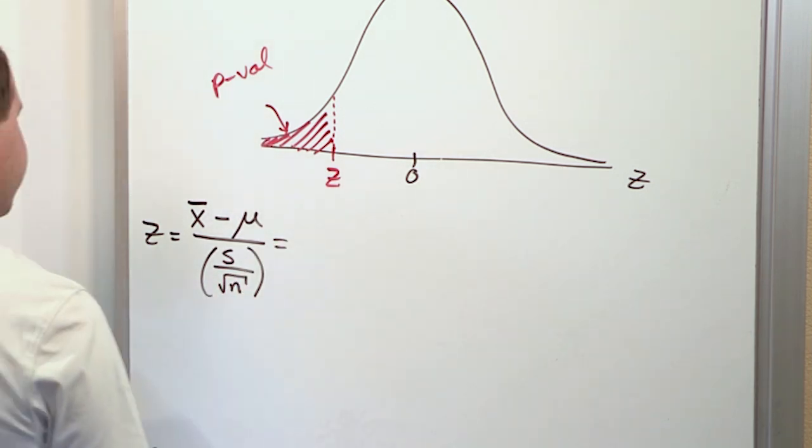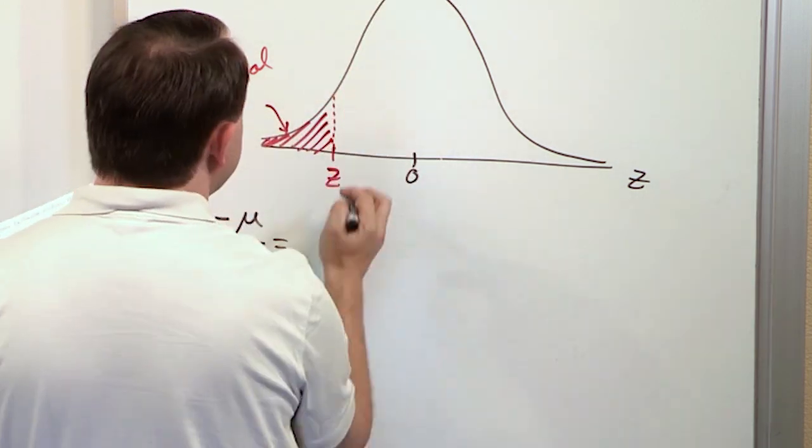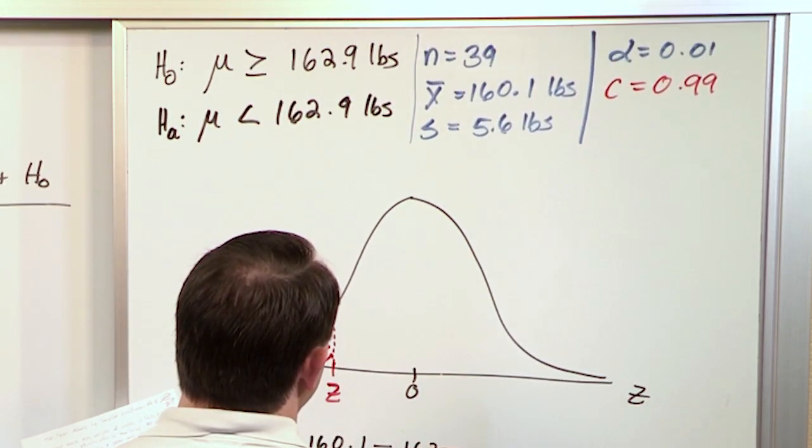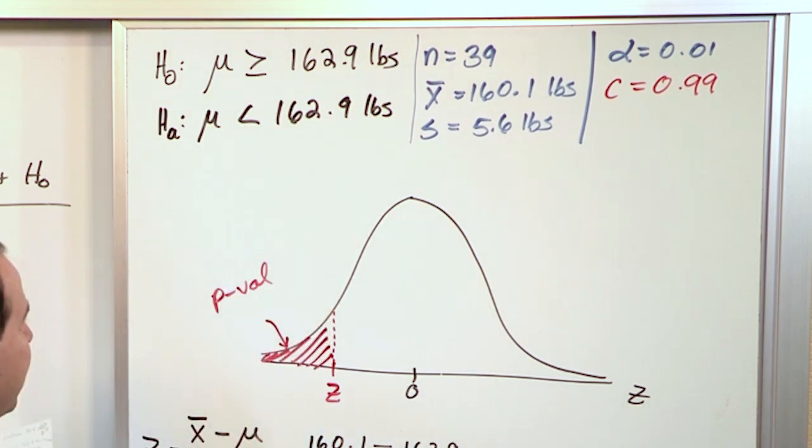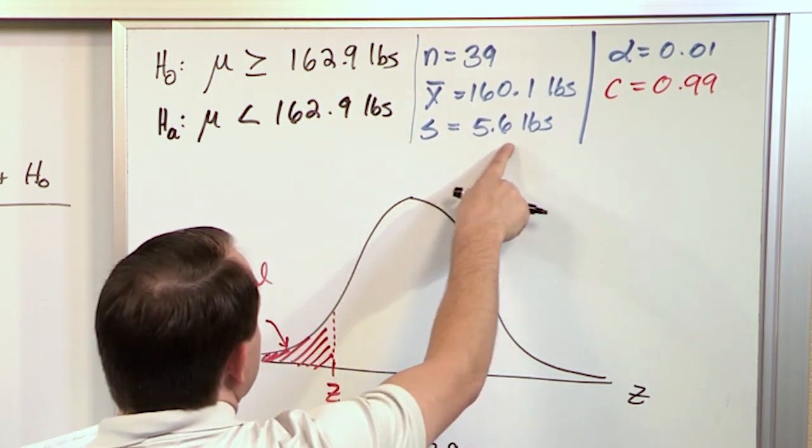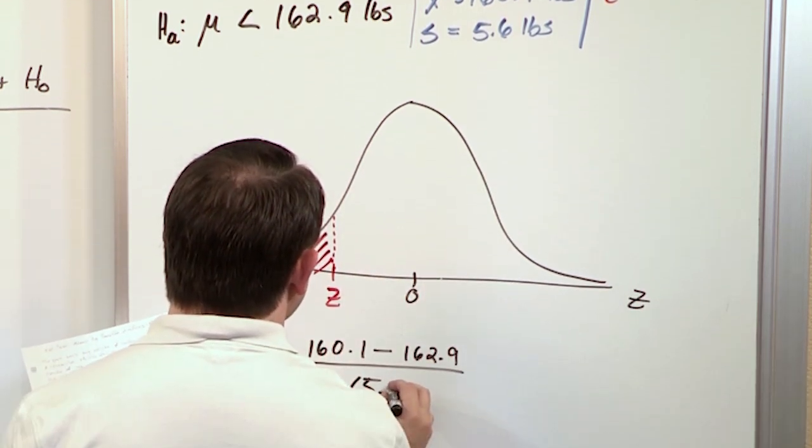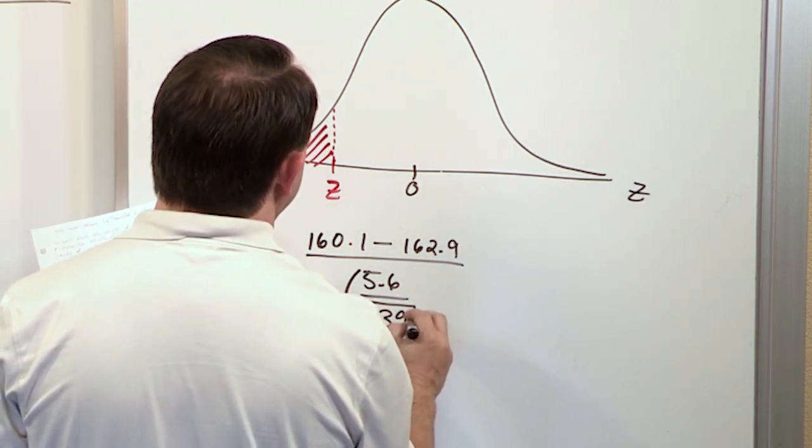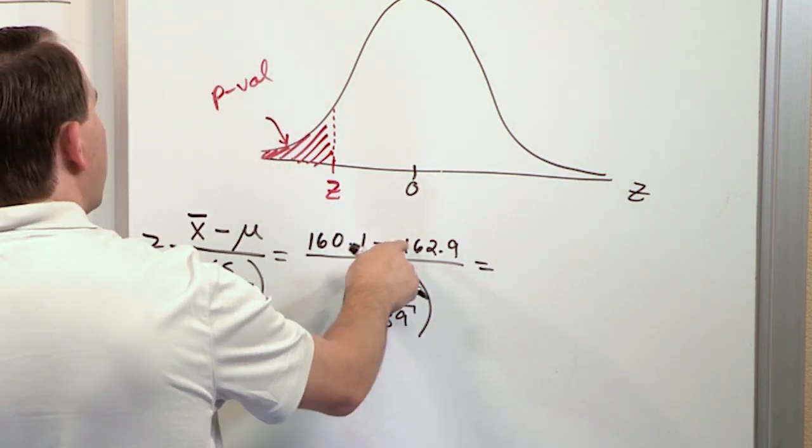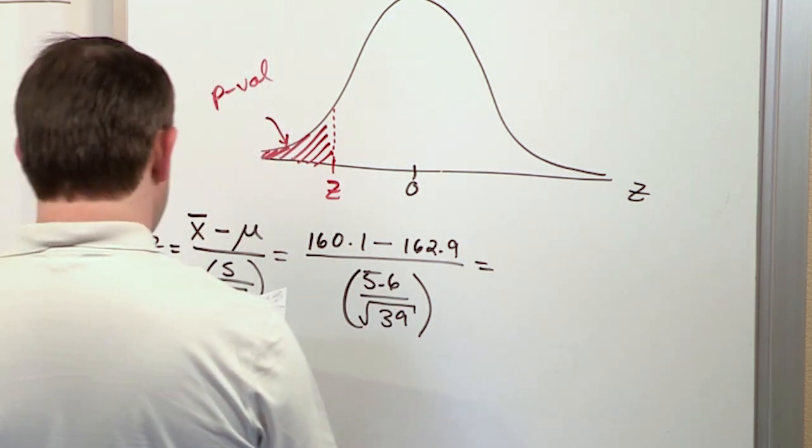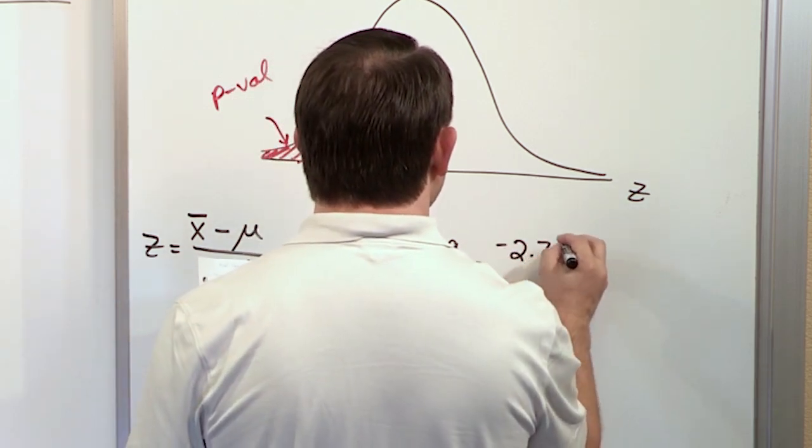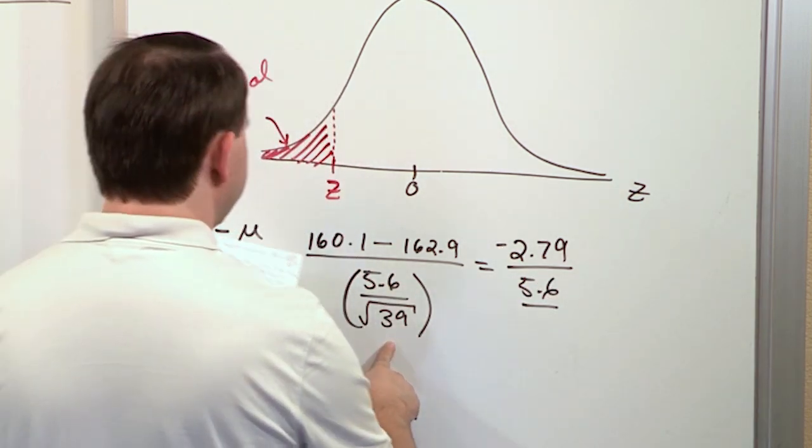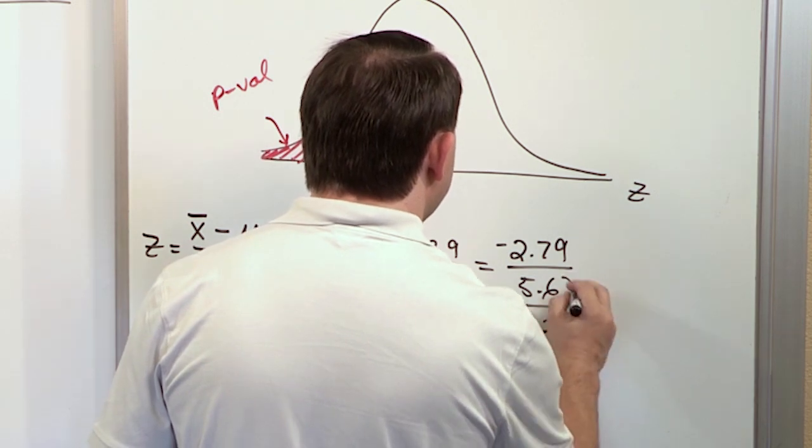And so we say this is going to be 160.1. This comes from the null hypothesis, 162.9. On the bottom, s is the standard deviation of the samples that we collected. 5.6 pounds was the standard deviation of the raw data that we collected from people. And then we have the square root of n, which is 39. So on the top, 160.1 minus 162.9, we get negative 2.79 on the top. And on the bottom, we'll leave the 5.6 for now. The square root of 39 is 6.245.